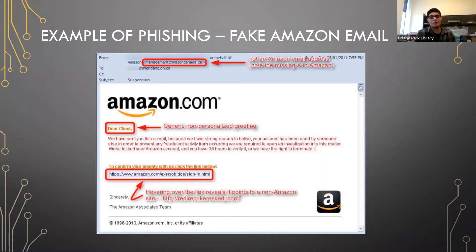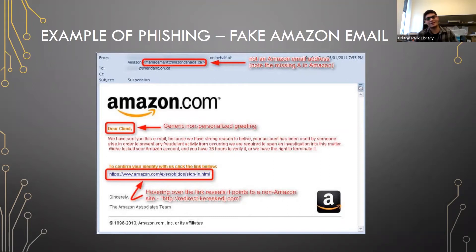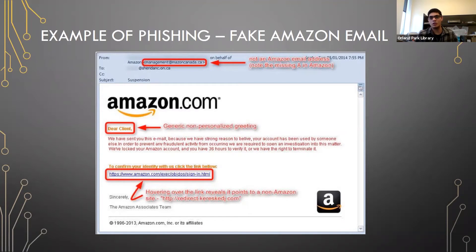Phishing is very illegal — don't do it. A lot of these phishing emails automatically get filtered into spam by services like Gmail or Comcast, so you may never even see them. But not all of them get caught. If you use common sense and check the sender — like seeing 'management@amazo-ncanada.ca' — just delete the email right away.